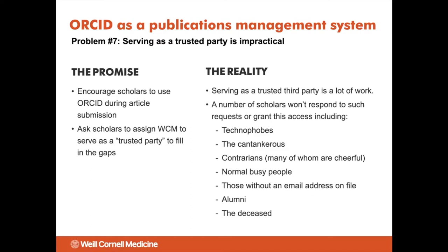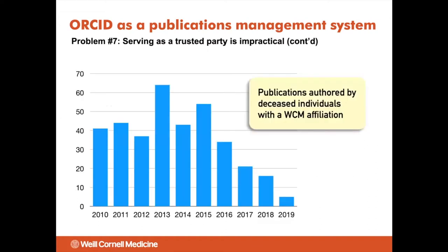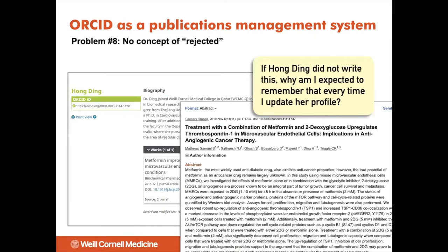One not insignificant group who won't give permission are people who are deceased. There are a significant count of publications by Weill Cornell-affiliated individuals where those individuals are deceased. Another problem is that ORCID does not have a concept of 'rejected.' For example, we have a scholar by the name of Hong Ding, which is a relatively common name. If Hong Ding did not write a particular article, how are we expected to remember that? We need systems to keep track of not only the articles that someone wrote, but also the articles that someone did not write.